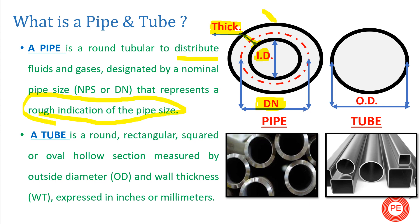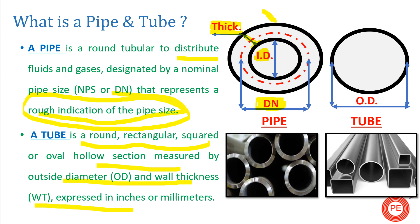With a fixed outside diameter there is always a fixed nominal diameter or nominal pipe size. Nominal pipe size is a rough indication of the pipe size. A tube is a round, rectangular, squared, or hollow section measured by outside diameter and wall thickness expressed in inches or millimeters. If the T/D ratio is less than 6 mm, the cross section is generally referred to as a tube. Tubes are used in industry for instrumentation taggings and instrumentation hookups.